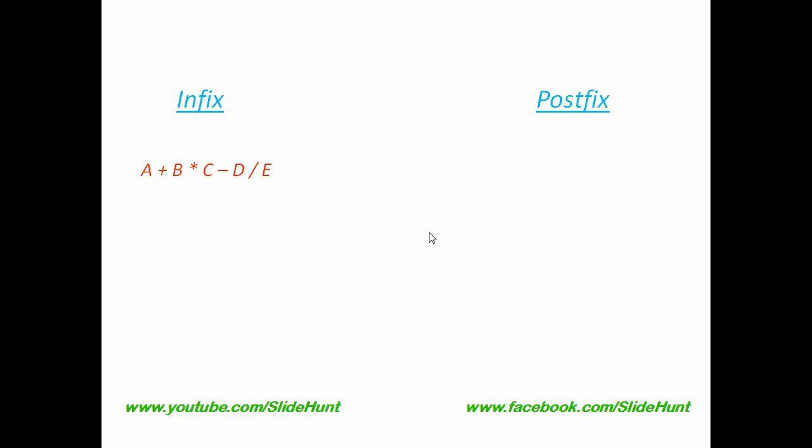We check each character or token to determine whether it is an operand or an operator. Here we start from A — A is an operand. If it is an operand, we simply add it to the postfix expression or string. So we put A here, then move to the next position.